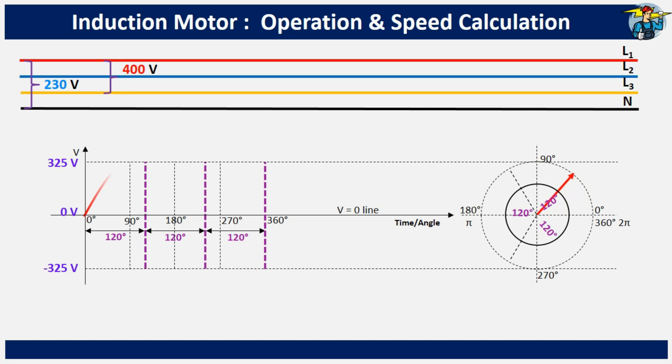If the red line of the three phases reaches its peak value on its sinusoidal waveform at a certain point, the yellow line reaches its peak value 120 degrees later. Similarly, the blue phase reaches its maximum value another 120 degrees later, creating a rotating magnetic field in the direction of R-Y-B.